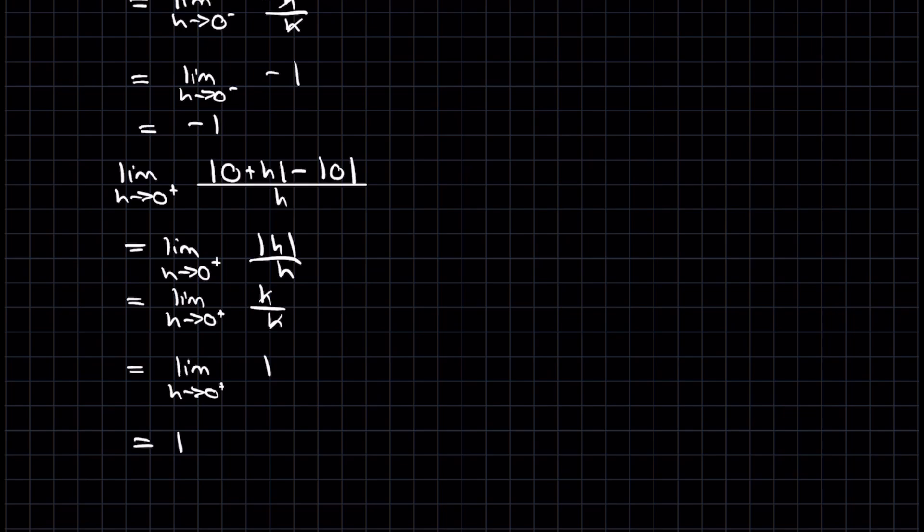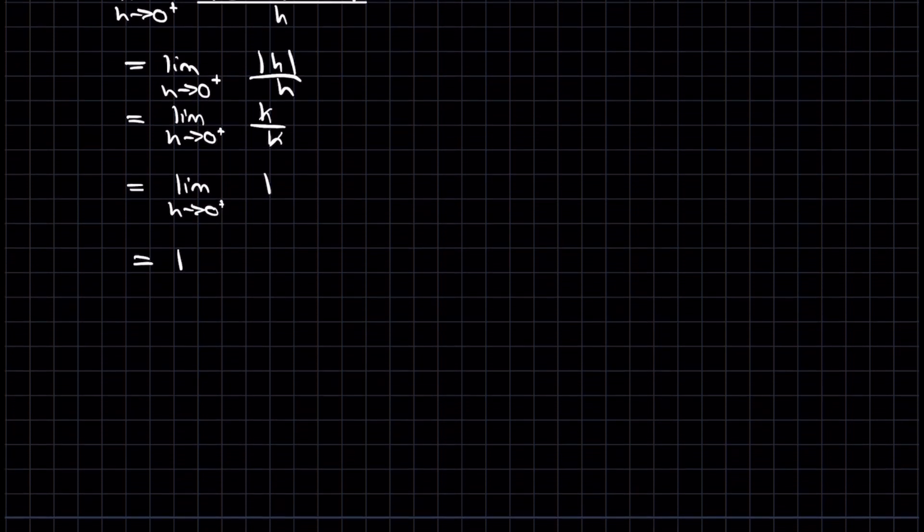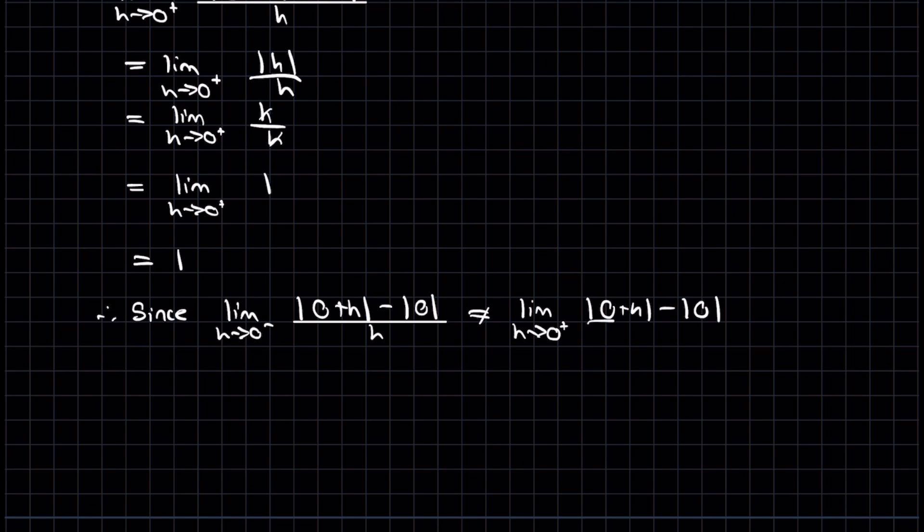So now I'm going to make a little conclusion. I'm going to say since the left-hand limit, which is the limit as h approaches 0 from below of this difference quotient, since that does not equal the limit as h approaches 0 from above of that same difference quotient, then the limit as h approaches which is 0,